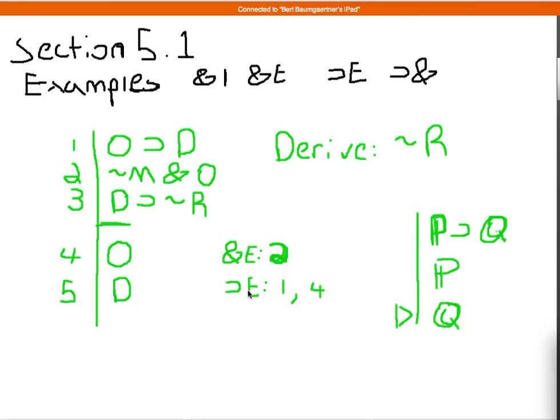And now that I have d, remember my goal is to derive not r. And I can do that here. Because I have the material conditional, if d, then not r. And I also have the antecedent. So, let me just draw this line down a little bit. So at line 6, I can write not r. And my justification for that is again, conditional elimination. From lines 3, and from line 5.